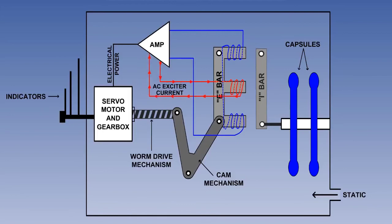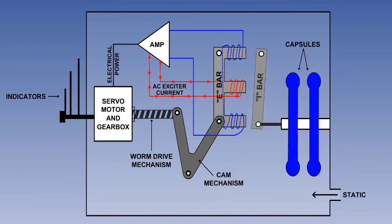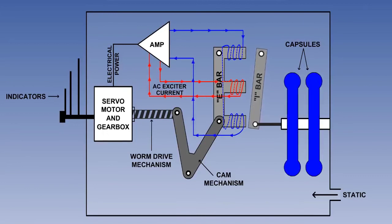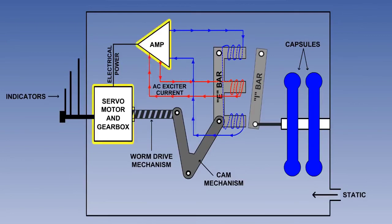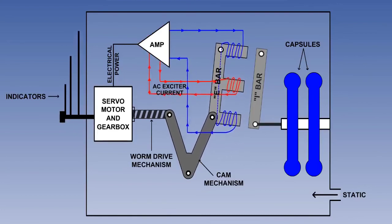When the capsules expand or contract with changes in altitude, they move the I-bar on its pivot, and the gap between the I-bar and E-bar will change. This causes an imbalance in the magnetic fields and an electrical current will flow in the circuit. The current is amplified and fed to the servo motor, which drives the pointer. A worm drive and cam mechanism realigns the I-bar with the E-bar. Once realigned, equilibrium is restored and the altimeter indicates the correct altitude. In practice, the E-bar movement and the realignment can be considered to be a single continuous process.